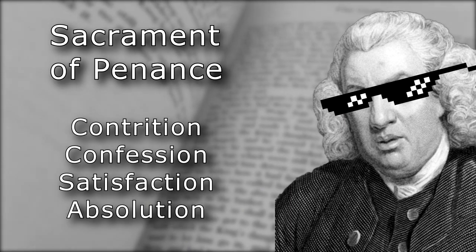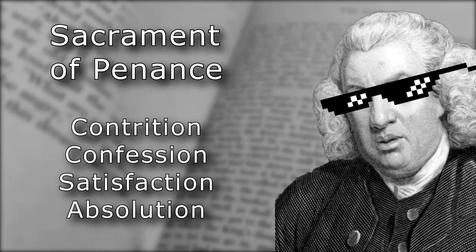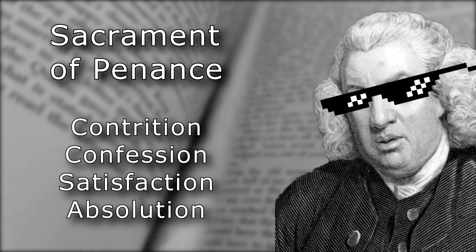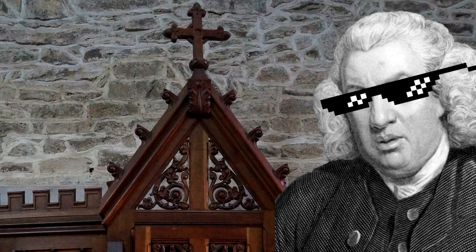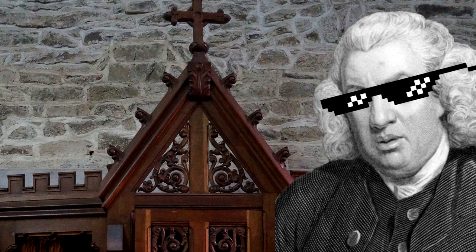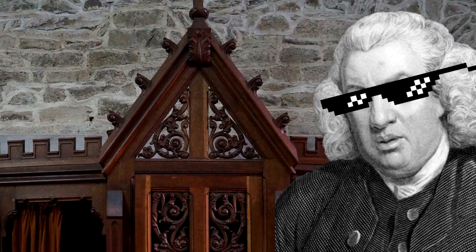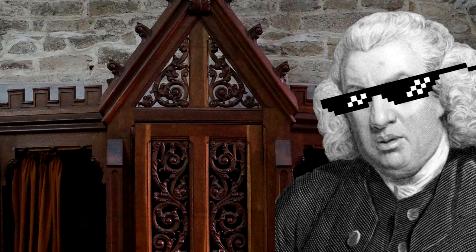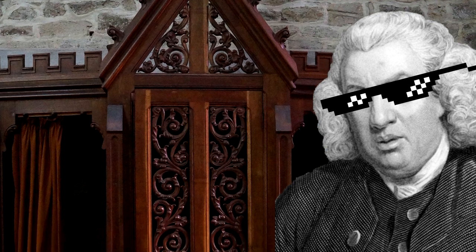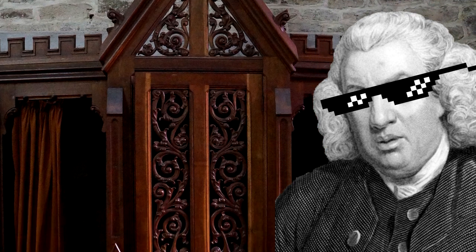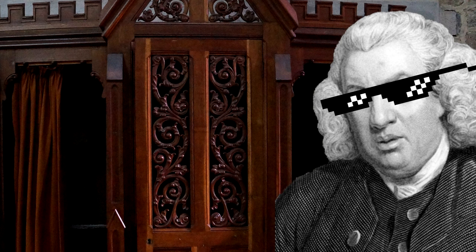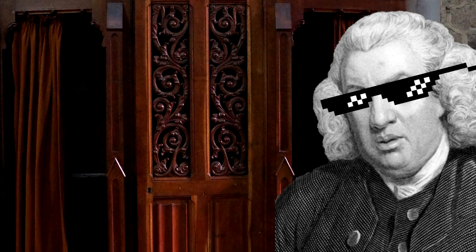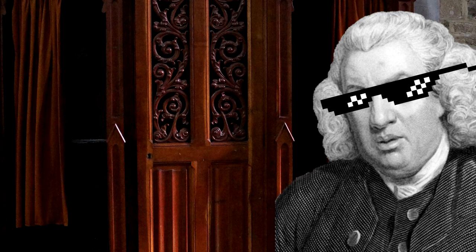The sacrament consists of four parts: Contrition, Confession, Satisfaction, and Absolution. The prayer of absolution performed by the priest at the end of the confession absolves the penitent — the person seeking forgiveness of their sin. This forgiveness was the primary definition of absolution when it came into general use in the 1400s.